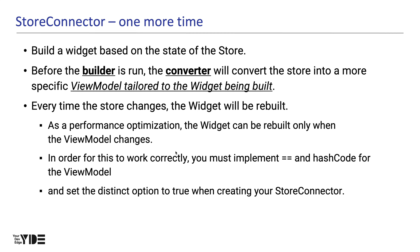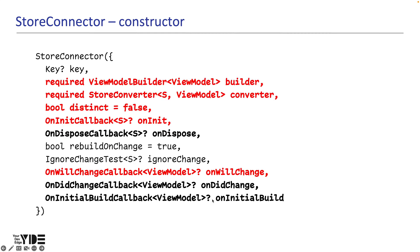For this to work, you need to override the view model's equality operator and hashCode, and you need to set the distinct option of StoreConnector to true. I will always use a StoreConnector if I need to rebuild the widget when the state changes.